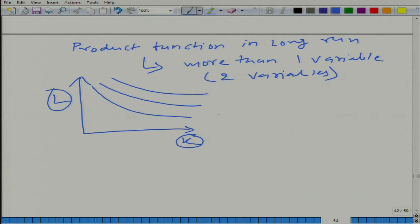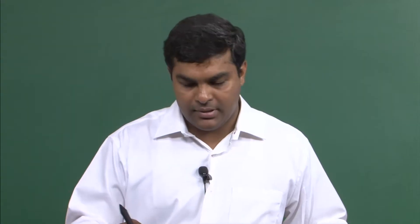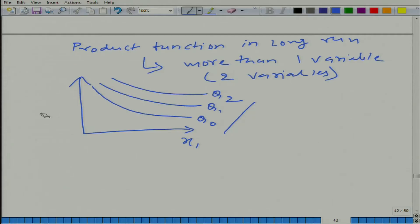These are isoquants — let us say this one is Q naught, this is Q1, and this is Q2. Notice that these look very similar to indifference curves; if instead of K and L we had two consumption goods x1 and x2, this would look like an indifference map. But of course, now we are talking about production, so we stick to K and L.